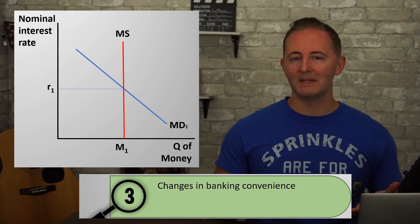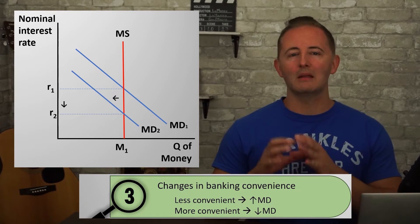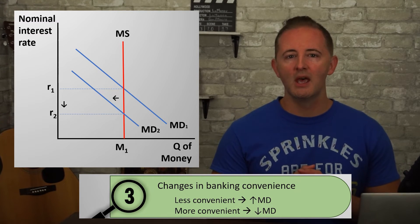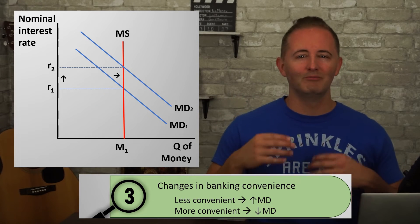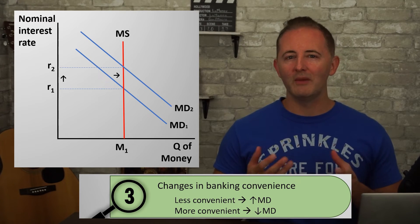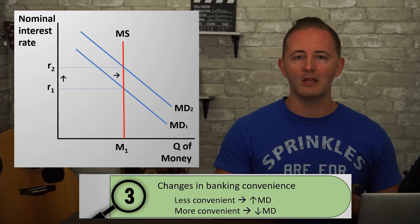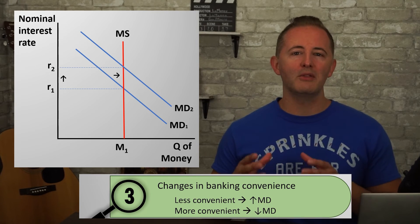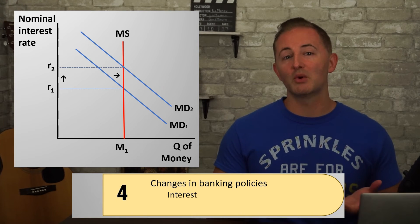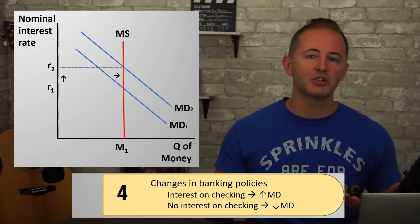We could also look at banking policies that make it easier or tougher for us to get money. When it becomes easier to get money when we need it, we'll actually demand less money because it can earn interest until just before we need to make a major purchase. But when it's tougher to get our money, we demand more just in case. For example, when a hurricane is coming, people get cash because they're worried that when the power's out, they won't be able to access their money electronically. And if banks start offering interest on your checking account, this would also increase the demand for money since it reduces the opportunity cost of holding money.